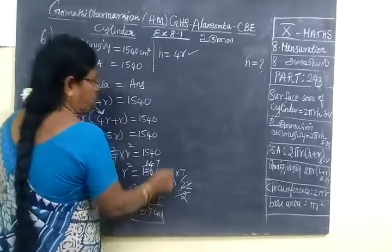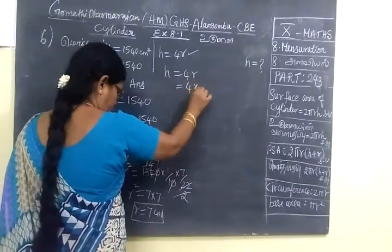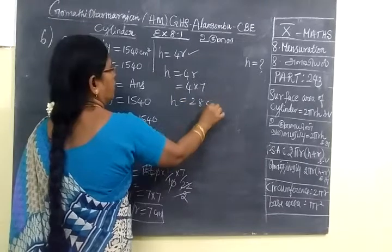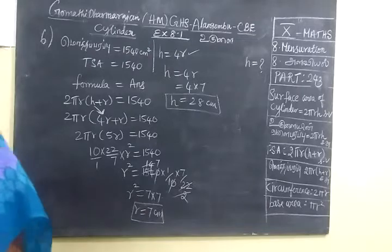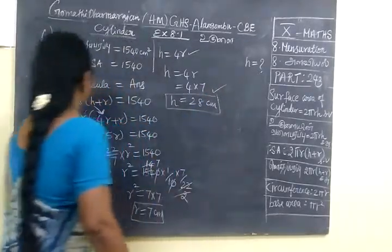When R = 7, we substitute diameter = 4R, so 4 into 7 = 28 centimeters. Therefore, height of the cylinder = 28 centimeters. So this answer is correct. This is a very simple question.